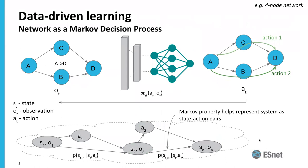This is how we use the network and model it as a Markov Decision Process. In a four-node network A, B, C, D, we model a flow going from A to D. The state of the network is represented by the current network statistics. You take an action, move to another state, and over time you represent this as a probability: given this state and this action, which is the next state you move to. This allows us to represent a network as a Markov property — a dynamic system with state-action pairs — and model it as a deep learning approach.